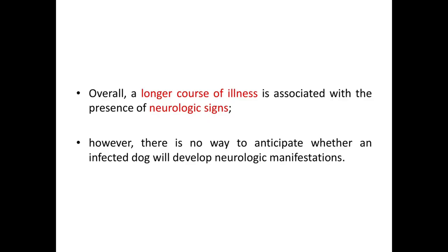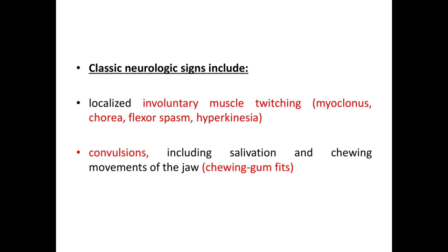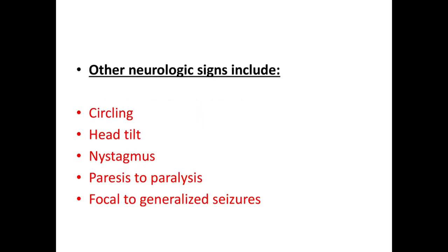A longer course of illness is associated with the presence of neurologic signs; however, there is no way to anticipate whether an infected dog will develop a neurologic manifestation or not. The classic neurologic signs include localized involuntary muscle twitching or myoclonus, chorea, flexor spasm or hyperkinesia, or convulsions including salivation and chewing movements of the jaw — also known as chewing gum fits. Other neurologic signs include circling, head tilt, nystagmus, paresis to paralysis, and focal to generalized seizures.